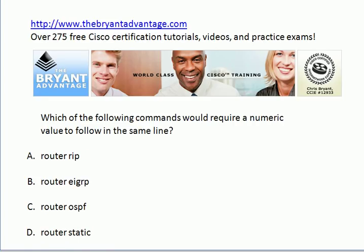Which one of these would require a numeric value to follow on the same line? Router RIP does not. Router EIGRP does — it requires an AS number. Router OSPF will require you to put a process number there. And there is no such command as router static; we use the IP route command to create static routes.